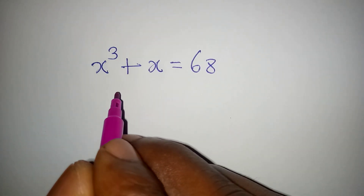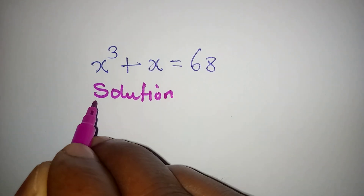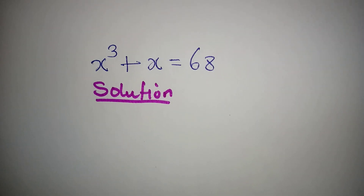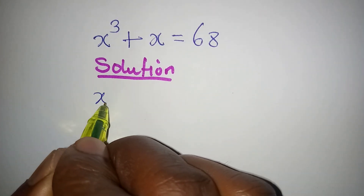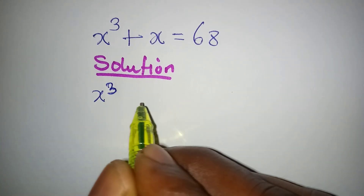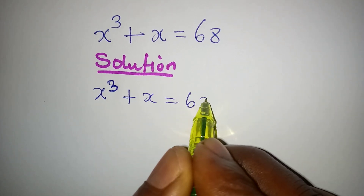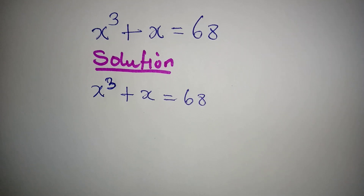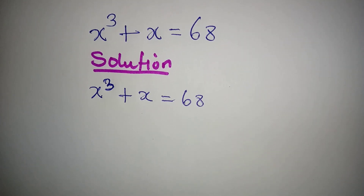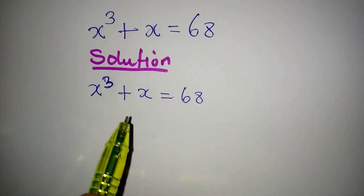Hello everyone. Let's provide the solution to this problem very quickly. We have x to the power of 3 plus x equal to 68. We are to solve this problem completely, meaning we should bring out the real and the complex solutions to this problem.